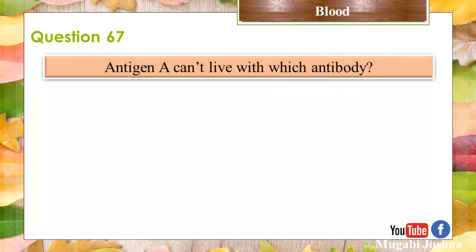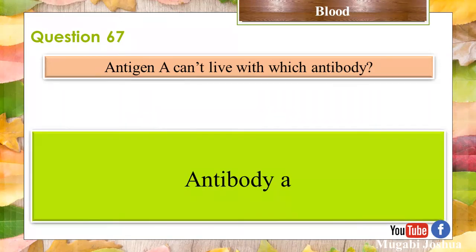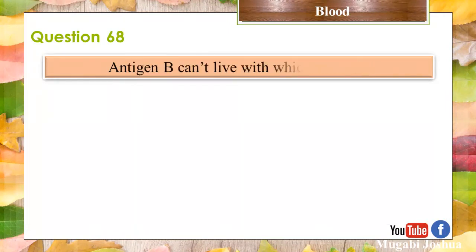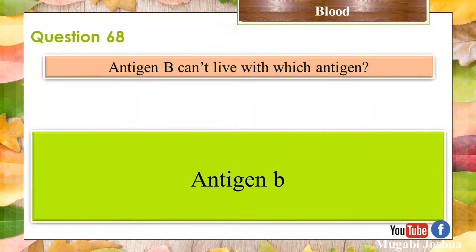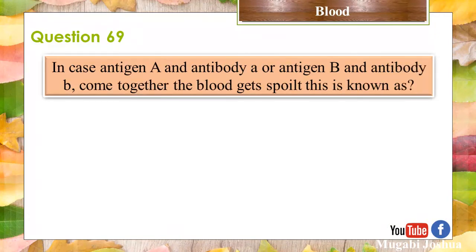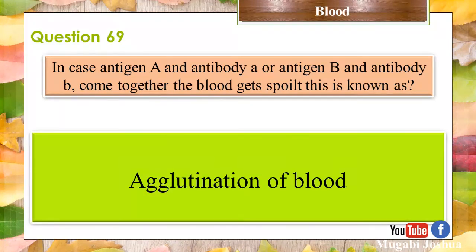Question 67: Antigen A cannot live with which antibody? Antibody A. Question 69: Antigen B cannot live with which antibody? Antibody B. Question 69: In case Antigen A and Antibody A, or Antigen B and Antibody B, come together in the blood, the blood gets spoiled. This is known as agglutination of blood.